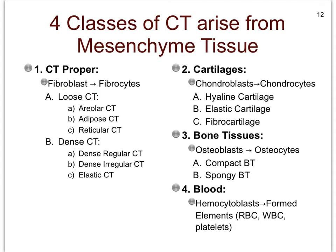The second group we call the cartilages, and we see three types of cartilages. Notice there's no D in cartilage when you spell it. The bone tissues as well — there are two bone tissues. And finally, also the blood.